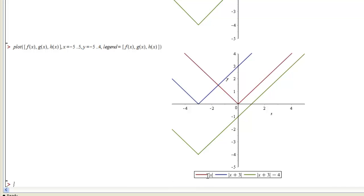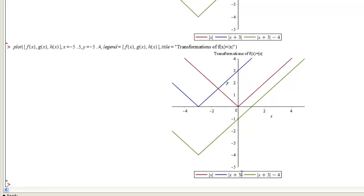So now I get a nice graph and down here there's a nice legend that tells which colors go with which functions and what the expressions defining those functions are. I could get a title as well by taking my plot command and now adding a title request. So title equals, and then in quotes, I'll call this transformations of f of x is equal to the absolute value of x. And now I have a nice graph with a title at the top and a legend at the bottom.